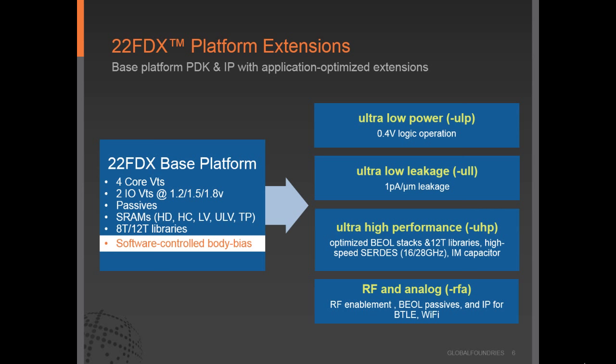And finally, the last extension is 22FDXRFA, or RF and analog. This brings in full characterization and enablement of the base platform technology for RF applications. It includes optimized RF layouts and p-cells, back-end-of-line passives, and IP for Bluetooth LE and Wi-Fi applications.